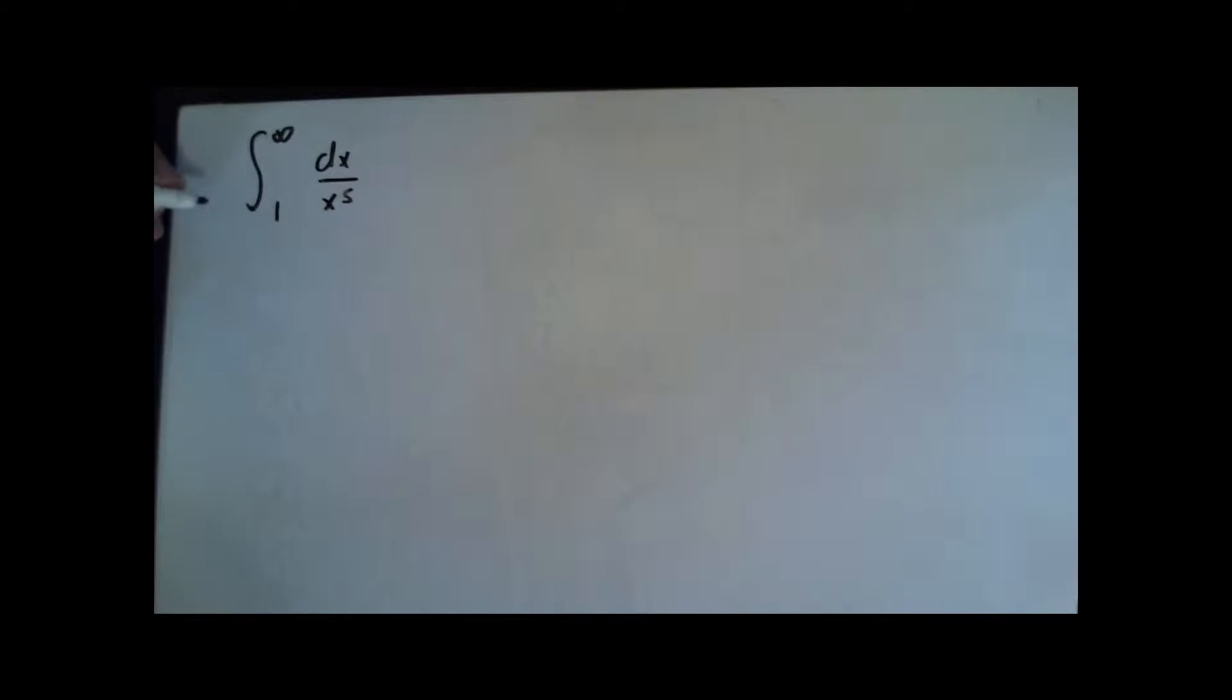So what we will do is convert to a limit format. I'm going to say the limit, and I'm going to replace infinity with n. So I'm going to say n approaching infinity of 1 to n of dx over x to the 5th.